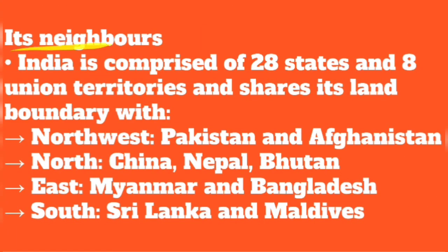Now, India's neighbors. India has 28 states and 8 union territories. The largest state is Rajasthan, the smallest is Goa, and the most populous is Uttar Pradesh.